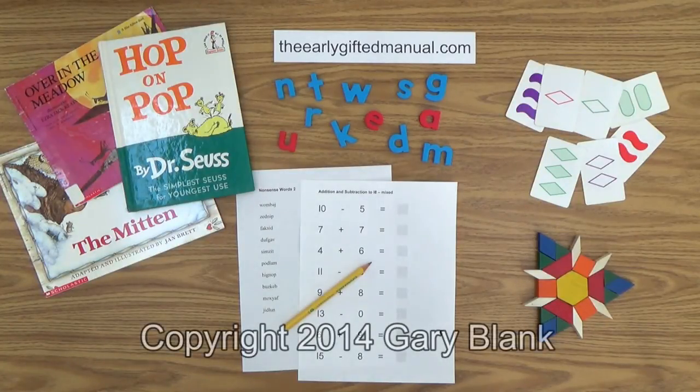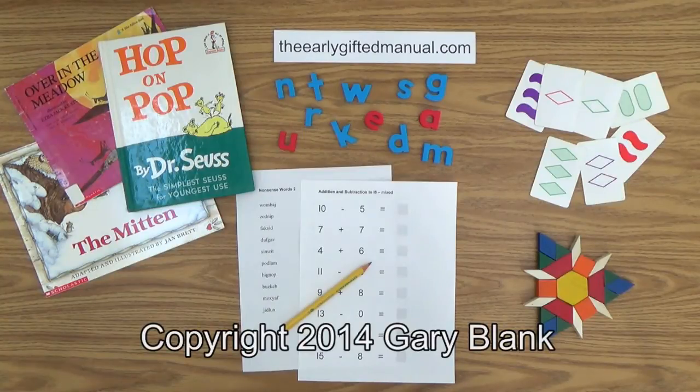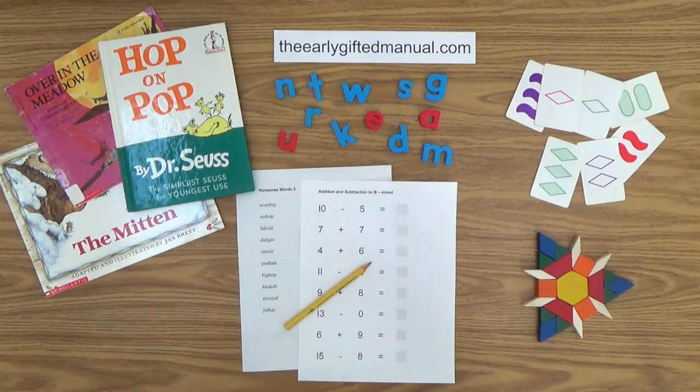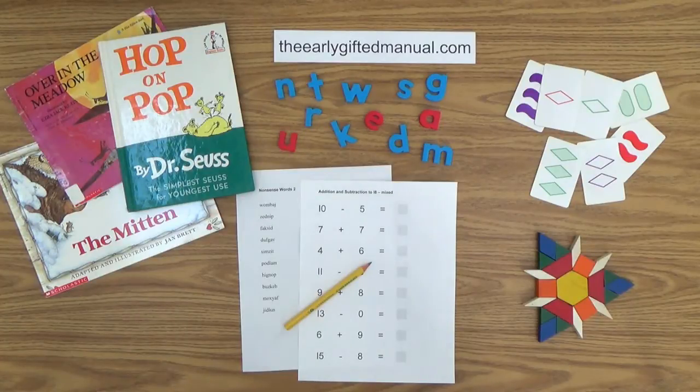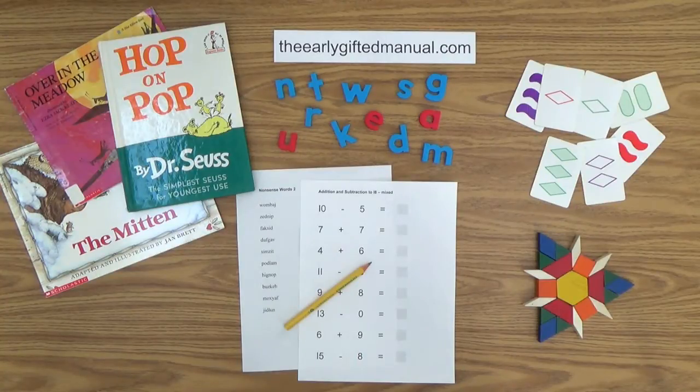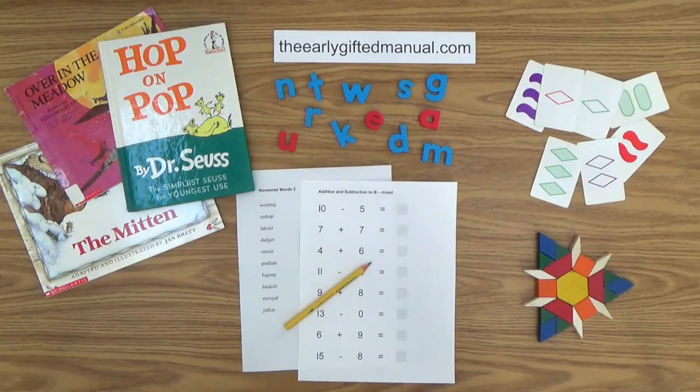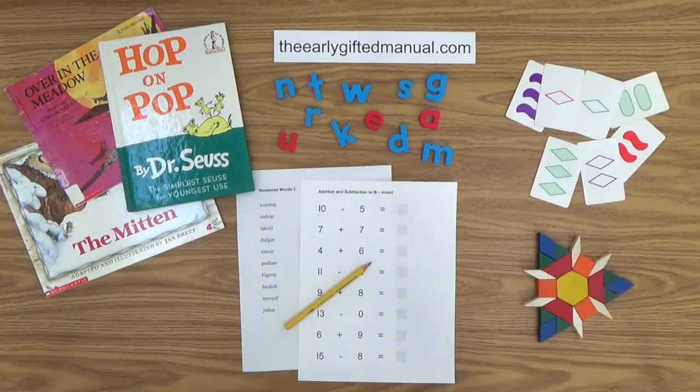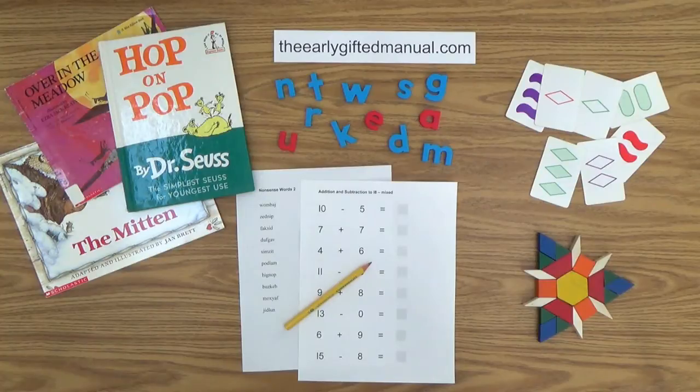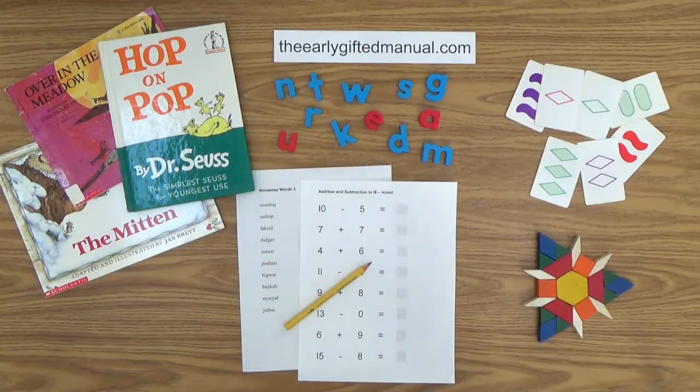Welcome to another parent-teacher video lesson from theearlygiftedmanual.com, a free website for homeschooled children three to seven years old and their parents that promotes and develops giftedness at an early age. I am Gary Blank, the creator of that site and your host and facilitator for this video and all of the videos in my educational program. As the video lessons are designed to work in conjunction with the program on my website, I ask you to, at some point, click on the URL link in the description box below, and this action will take you to theearlygiftedmanual.com. By doing that, you will be able to put this lesson and all of the video lessons here on my channel in the proper context of the total program that I am presenting to you and your child.